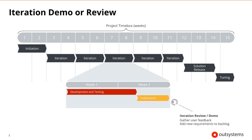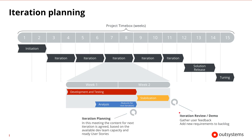Finally, there's an iteration review or demo where we gather user feedback and add any newly discovered requirements to the backlog. During the iteration, user stories in the backlog are analyzed and prepared for future iterations. Once this analysis is complete, an iteration planning meeting is held to determine which user stories will be worked on in the next iteration, based on the team's capacity and the user stories that are currently ready.